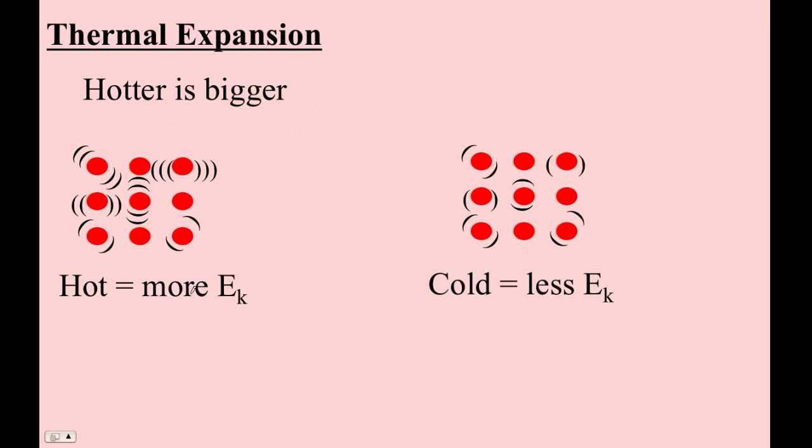The other thing that's kind of cool is that hot is bigger. It turns out that the molecules, when they vibrate back and forth, actually spend more time farther apart than they do closer together. And so objects in general expand. There's some notable exceptions to this. Things don't expand always, but in general, especially like metals, will expand as they get hotter.